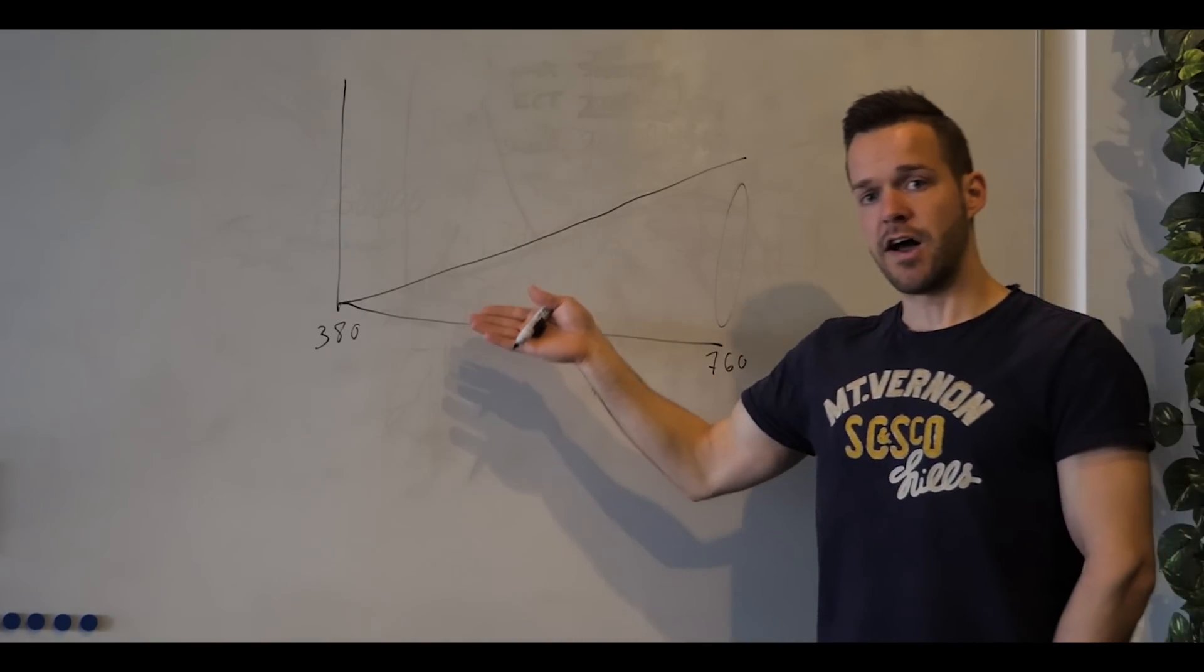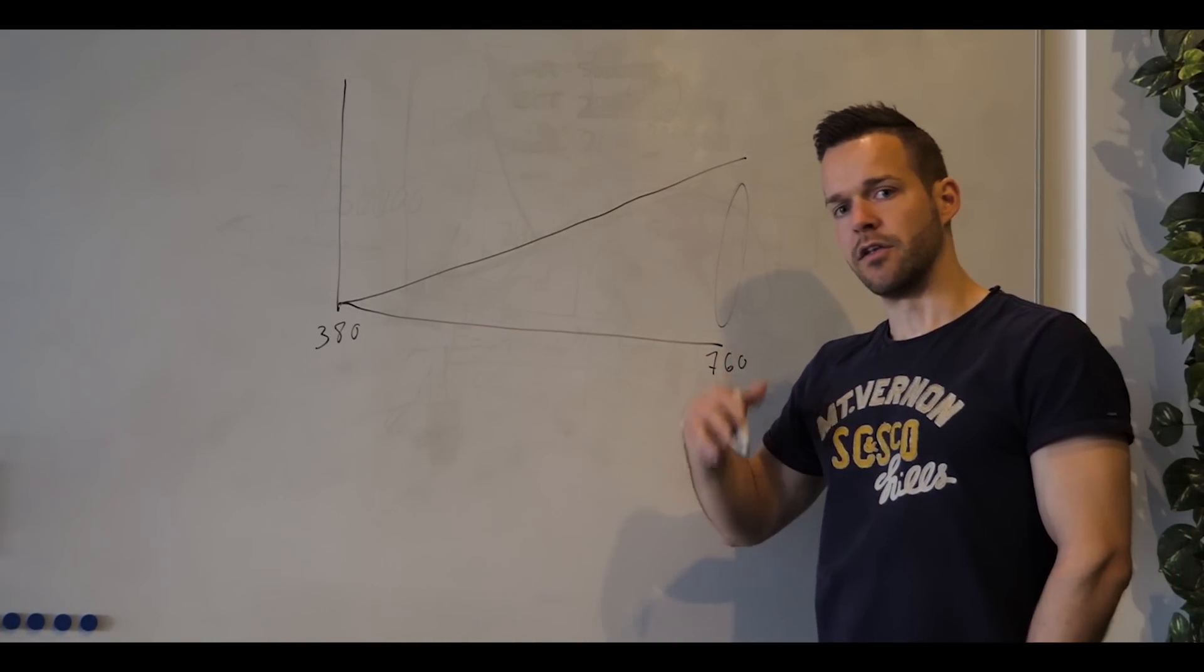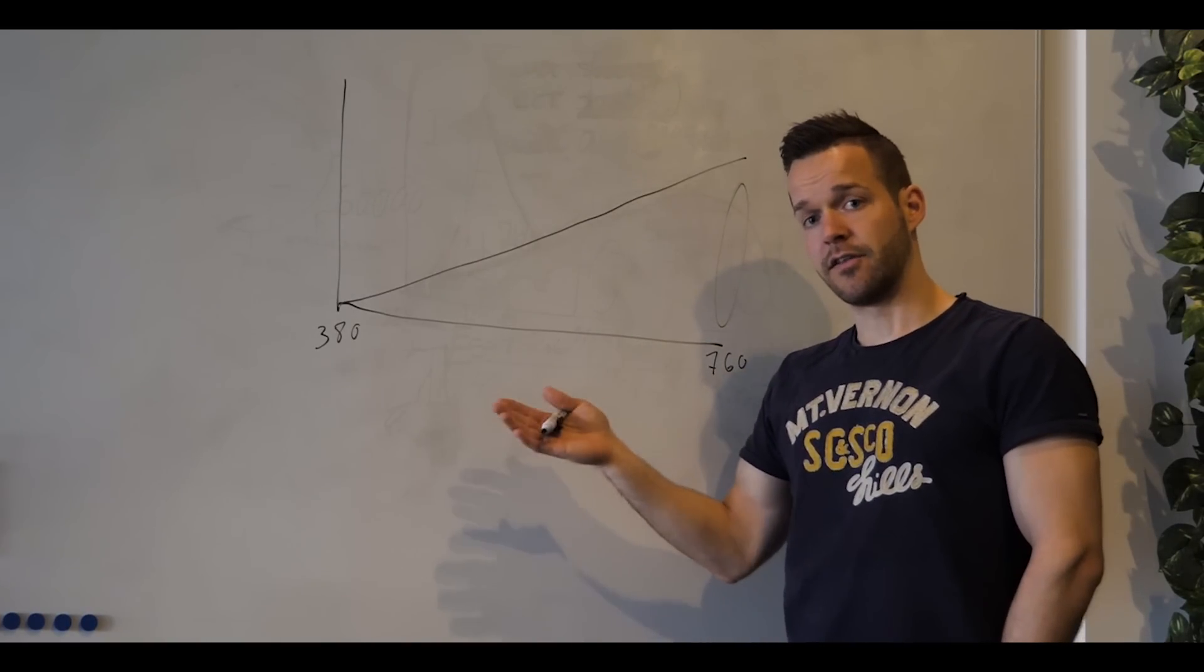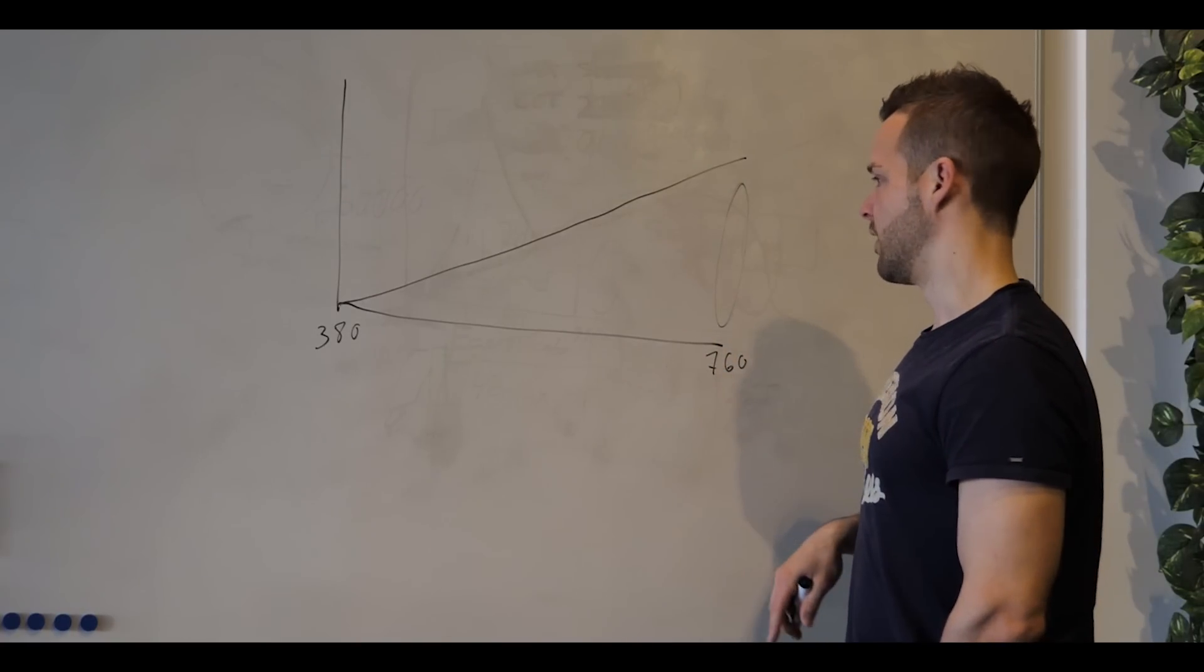So for instance, 5% of the energy that is used for the incandescent bulb is for light, and the last 95% is for heat. So that is not so energy efficient.